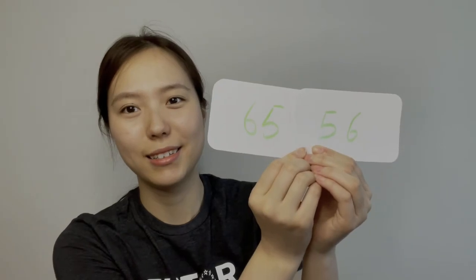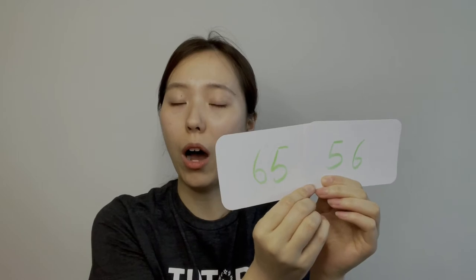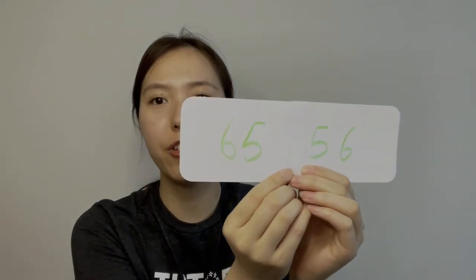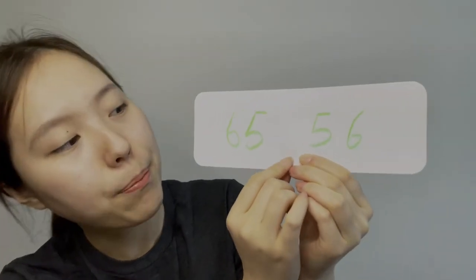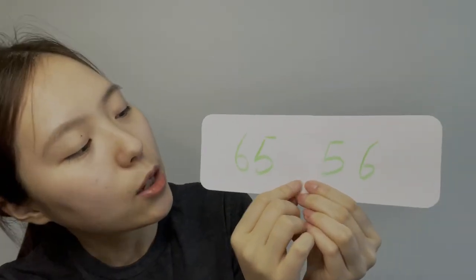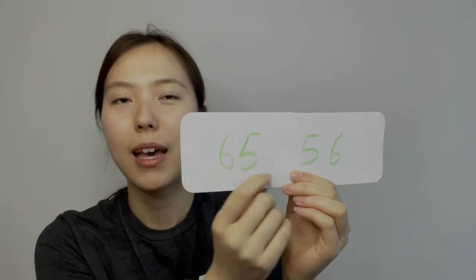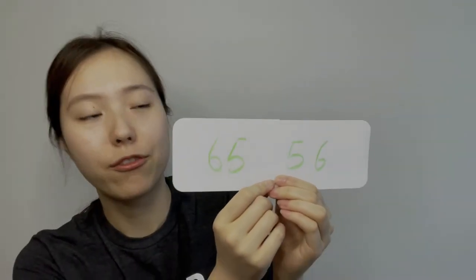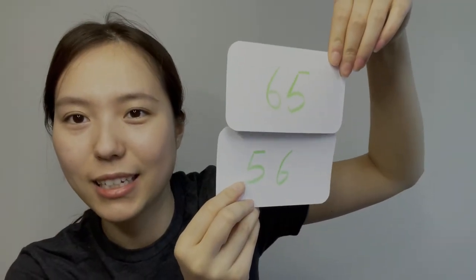Let's try one more: 56 and 65. This one looks confusing. Do you remember where we start when we compare? They both have 6 and 5 in their numbers. However, the one with 6 in the 10's place has the greater value. That's why we should always start from the highest place. So 6 is greater than 5, and 65 is greater than 56. Great job!